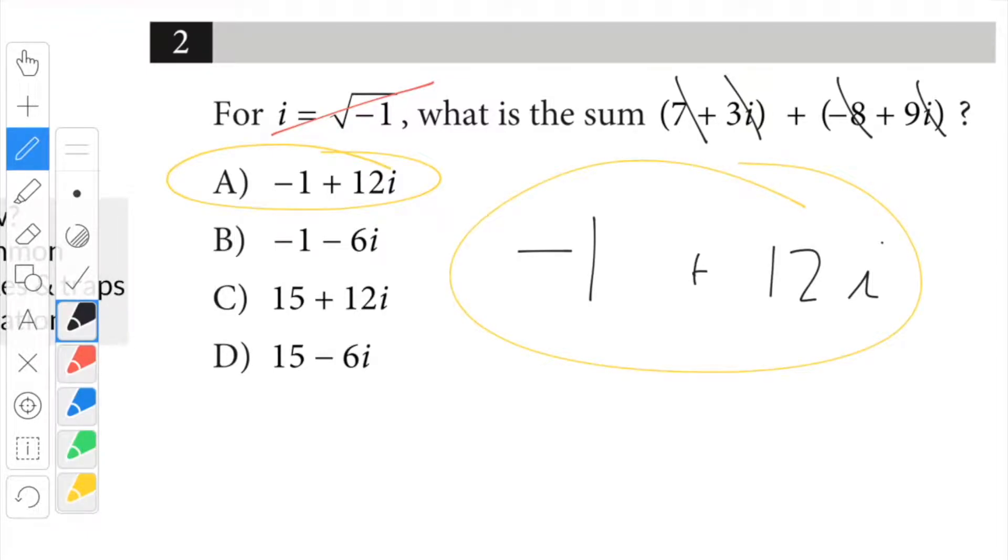Some common mistakes and traps, if you forget about negatives, then 7 plus the negative 8. If you forget about that negative, then you get the first trap answer, which is here. And if you do 3 minus 9i, you get the other trap answer.